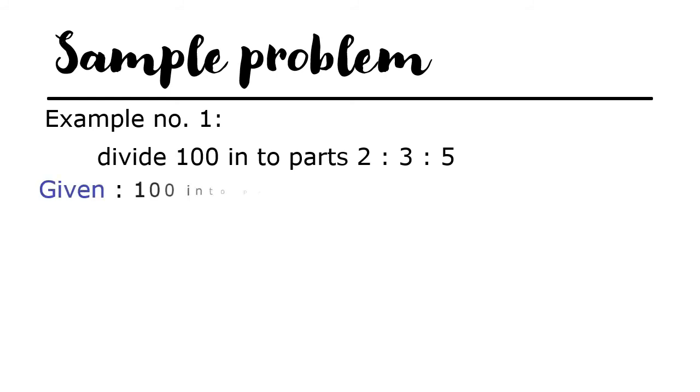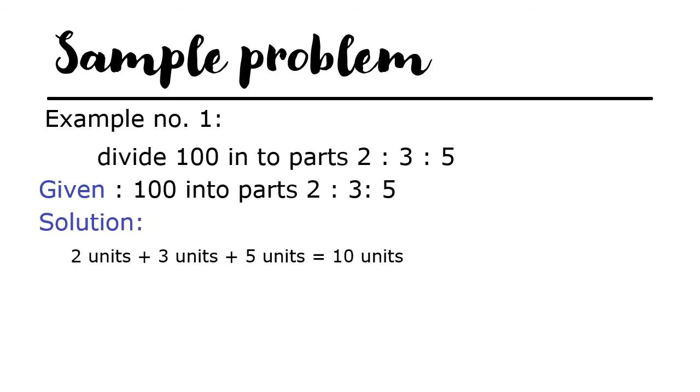Sample problem, Example number 1: Divide 100 into parts 2 to 3 to 5. Given: 100 into parts 2 to 3 to 5. Solution: 2 units plus 3 units plus 5 units equals 10 units. Therefore, 1 unit is equal to 100 divided by 10.